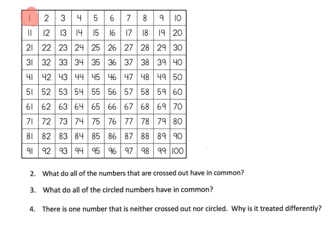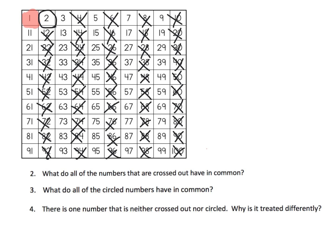Then we're going to circle the 2, and then we're going to cross off every multiple of 2. We're just going to skip count by 2s and cross off the 2s. By the magic of video, we finished that.